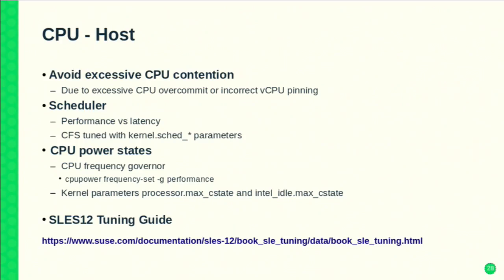On to CPU topics. The first is probably obvious: avoid over-contention of host CPUs. This doesn't mean normal scheduling contention on a well-used system — it means over-contention due to misconfiguration, such as running too many VMs on a host or incorrect pinning, like having several vCPUs all pinned to a specific physical CPU.